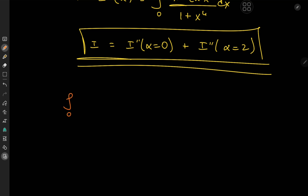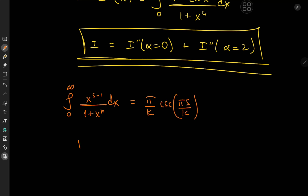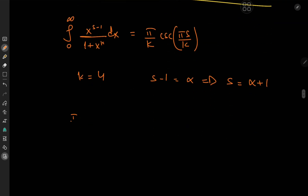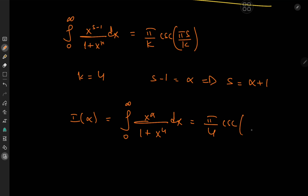The integral from zero to infinity of x^(s−1) over (1 + x^k) dx converges to π/k times the cosecant of (πs/k). For our case, k = 4 and s − 1 = α, meaning s = α + 1. So our integral function I(α) equals (π/4) times cosecant of (π/4)(α + 1).